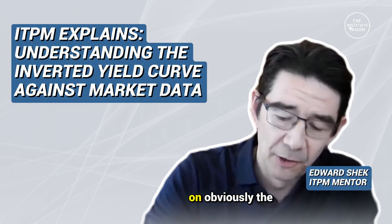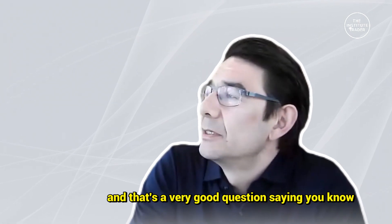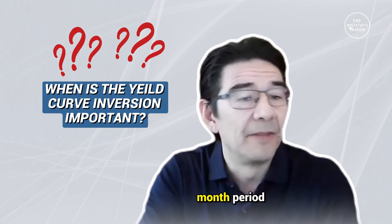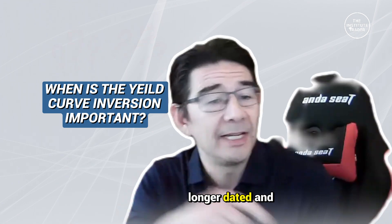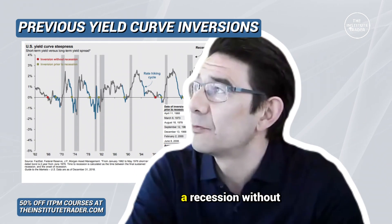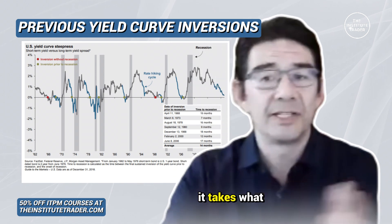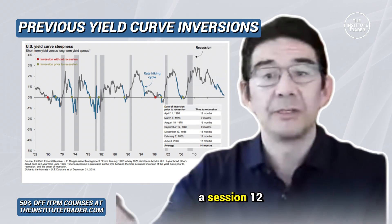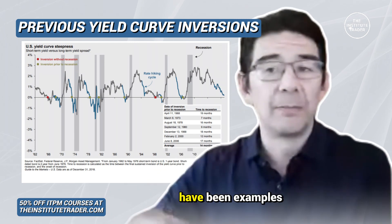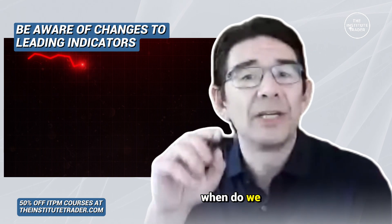On the inverted yield curve — historically, you don't have a recession without one. But when the yield curve inverts, it takes six months, 12 months, 18 months, even two years before a recession. There have been examples of each.